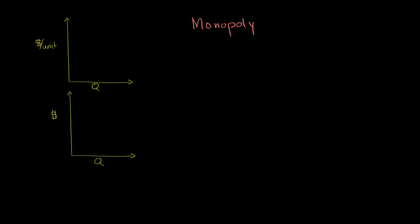Let's say that the industry we are in has a demand curve that looks something like that — a linear demand curve. This axis is dollars per unit, which in the context of demand is price, and this is quantity. On this second graph we still have quantity on the horizontal axis, but the vertical axis is the absolute level of dollars, so we can plot total revenue as a function of quantity.